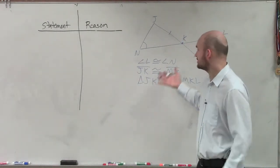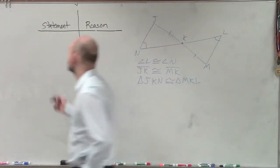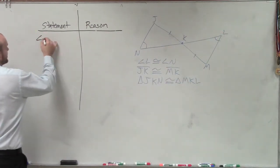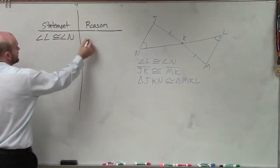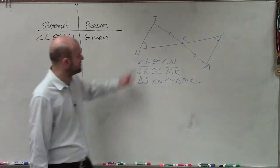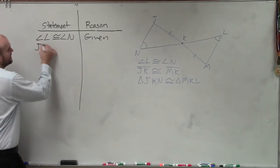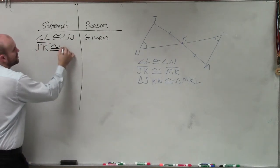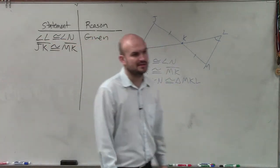To start off our statements, let's just go ahead and work on our given statements. Angle L is congruent to angle N because that's given. Now when we're given a given statement, make sure you label that in your triangle, which this one was already given. And then JK is congruent to MK, which you guys can see is also labeled in this triangle.